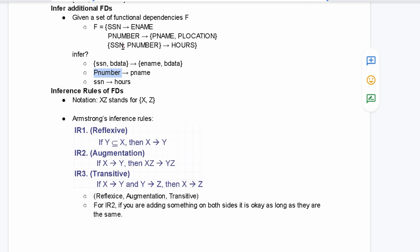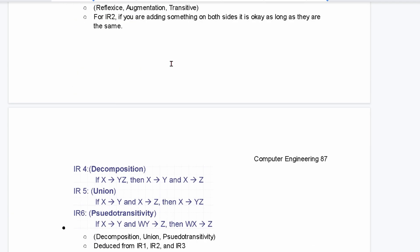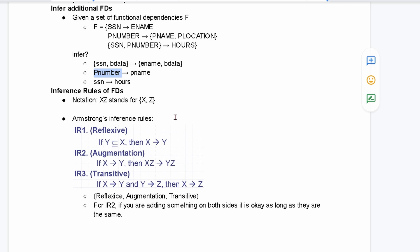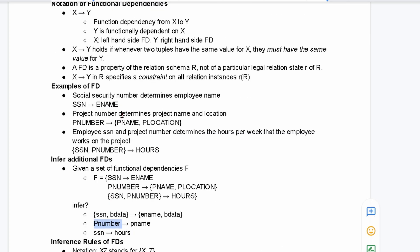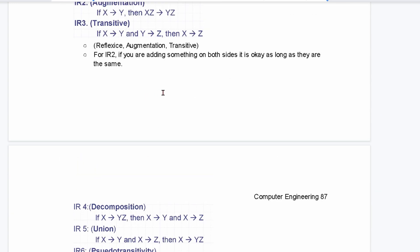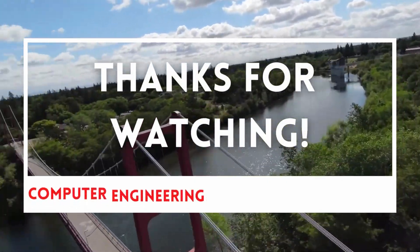Then we have social security number, P number goes to hours. Now, this looks exactly like our decomposition, except it's just switching sides. So, this one is also going to be decomposition. And that's just going to be it. How we would look at our infer additional FDs, functional dependencies, and we have our rules. And that is how we would go about applying them.